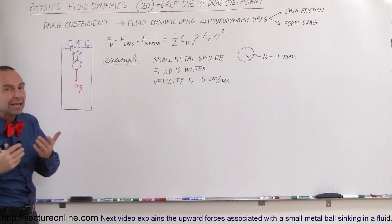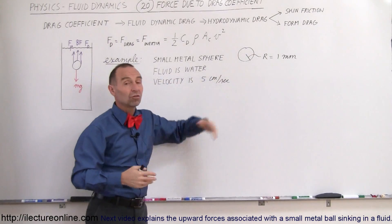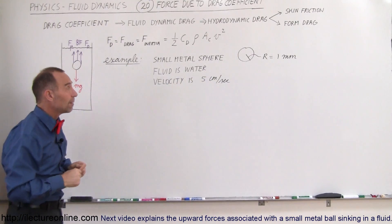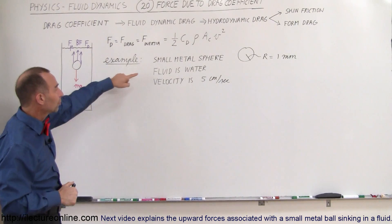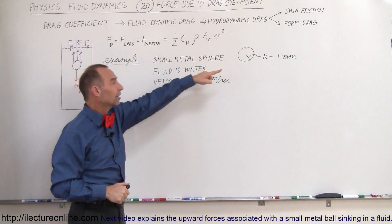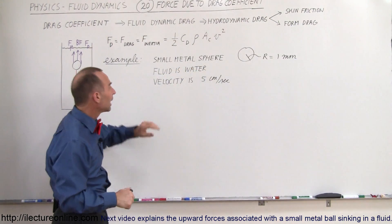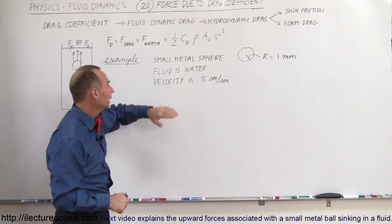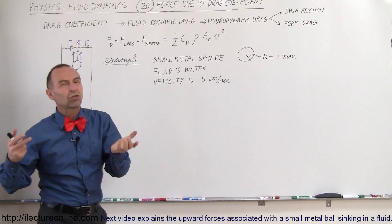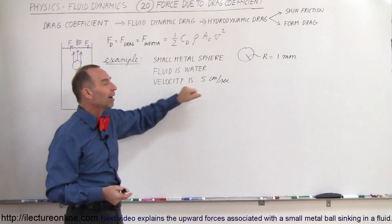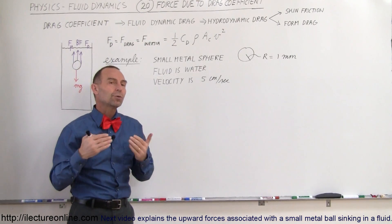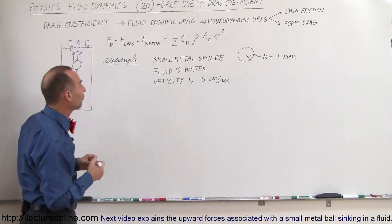That force is caused by the shape of the object and the drag coefficient associated with that shape. Now let's say that the sphere is pretty small, a small metal sphere. Let's say the radius is one millimeter. And let's say that the fluid is water and that the velocity, let's say it reaches terminal velocity and it's moving down at a speed of five centimeters per second. So what would be the force associated with that drag coefficient?